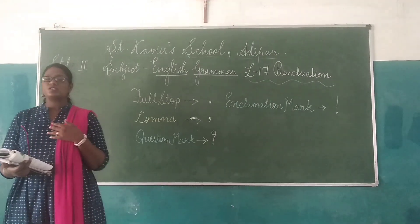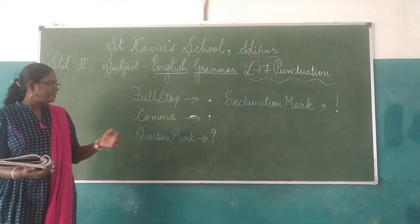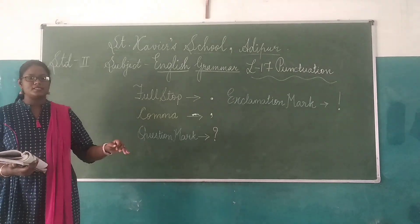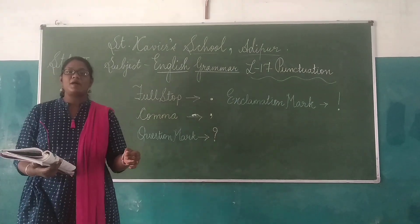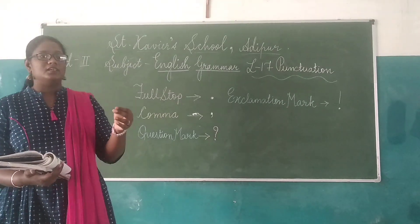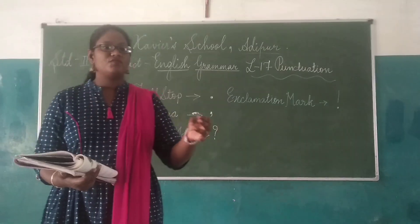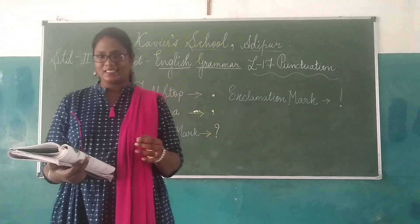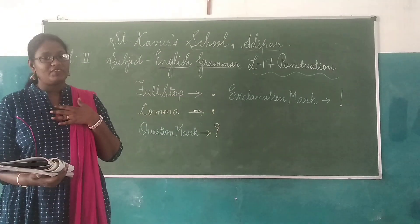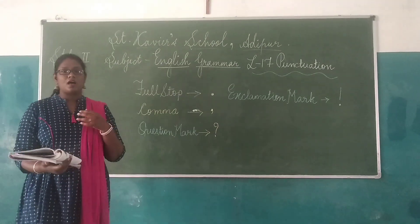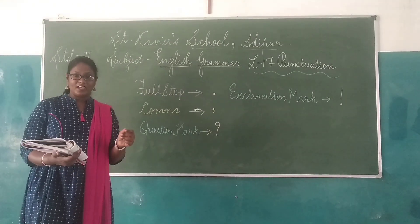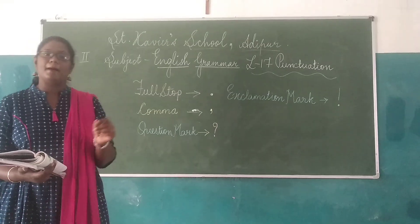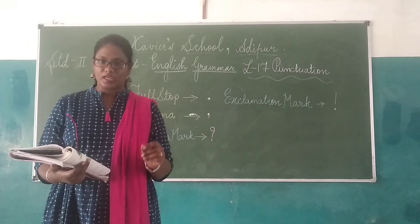For example: 'I need to buy some snacks, fruits, sugar' — like this. Another example: 'My favorite subjects are EVS, English, Maths.' These are examples of how commas are used to separate items in a list.